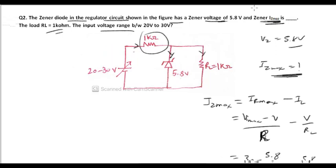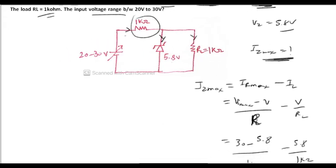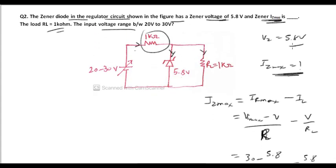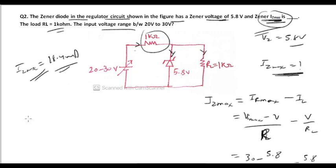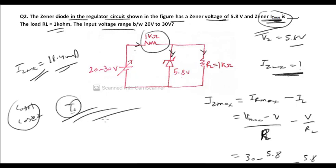The maximum zener diode current Iz max is equal to 18.4 milliampere. This is the correct answer. If you have any doubt related to Case 1 or Case 2 in the voltage regulator, you can ask me in the Telegram group or in the YouTube comment section below. Join our Telegram group where lots of questions are solved on a daily basis to revise concepts before the VSSC and HSFC exams.